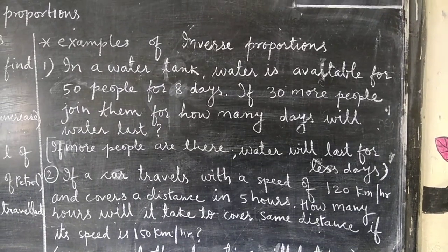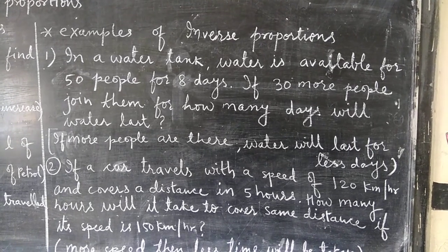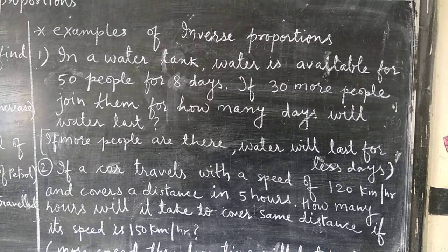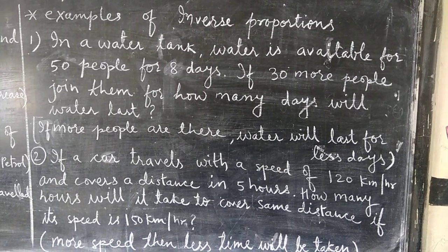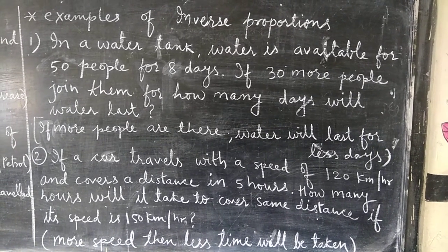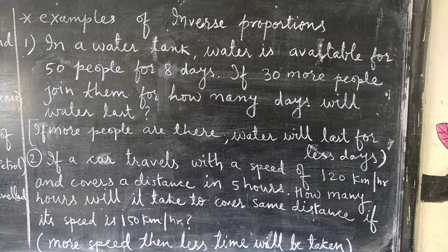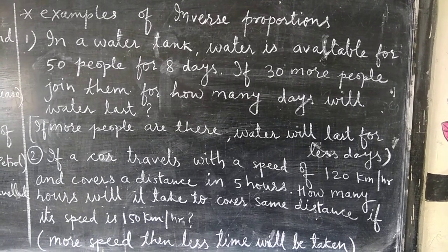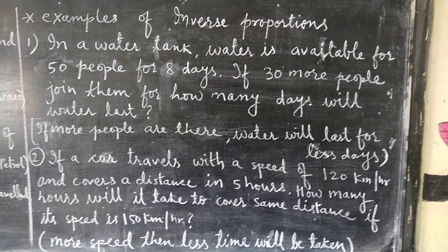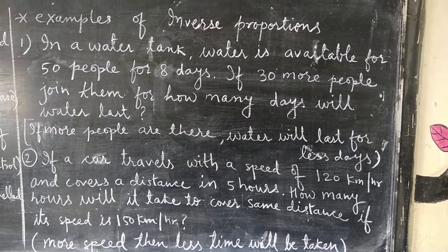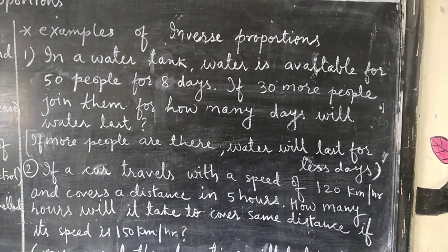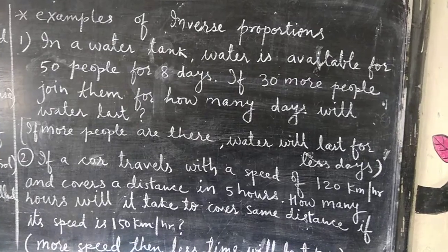Now let us see examples of inverse proportions. In a water tank, water is available for 50 people for 8 days. If 30 more people join them, for how many days will the water last? If 50 people have water for 8 days, and more people join — so instead of 50 there are 80 people — then the water will definitely last for fewer days.